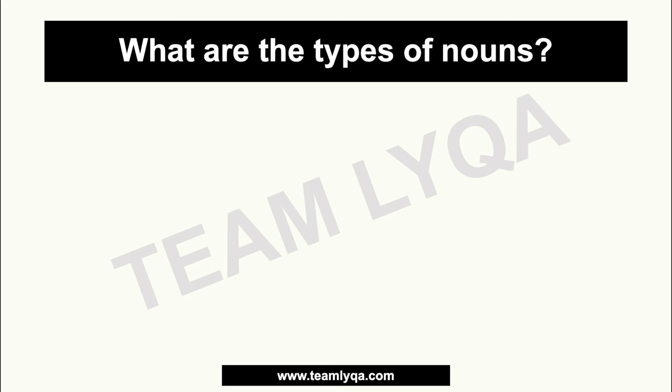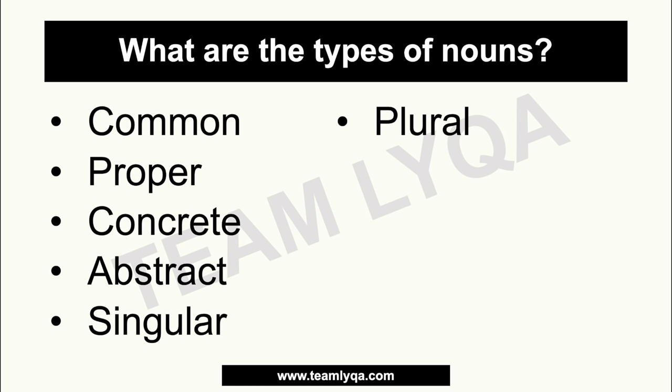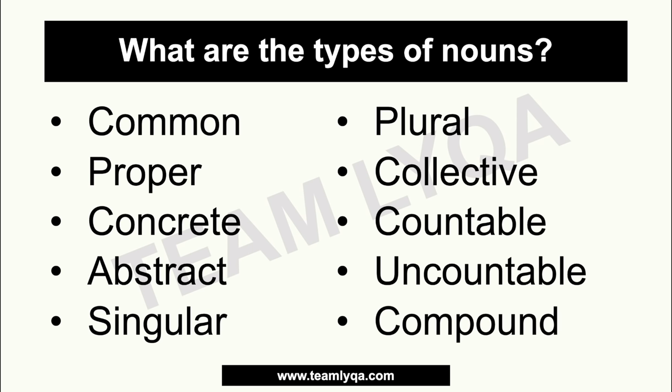What we're going to cover today are these ten types. There are resources online where the list has nine types of nouns, some have eight, some eleven, but these ten are the ones I most commonly hear, commonly use, and that people most commonly get confused about. So these ten are what we'll discuss today.